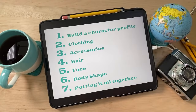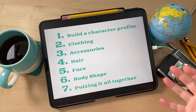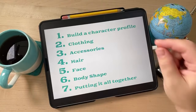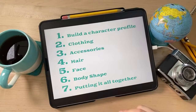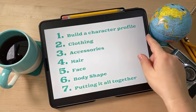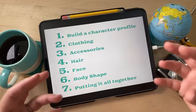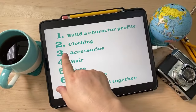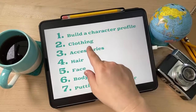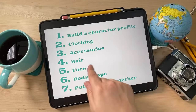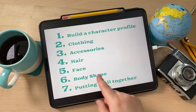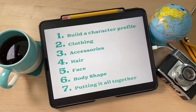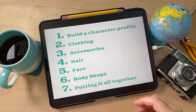This week we're focusing on drawing a human character in a progressive style — just one little piece at a time. We'll start with building our character profile: who is the character, what do they look like, written down. Then we move on to designing the clothing, accessories, the character's hair — which is what we're doing today — the face, the body shape, and then putting it all together.